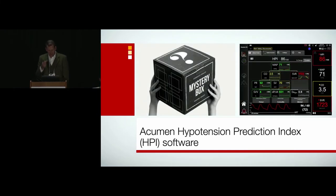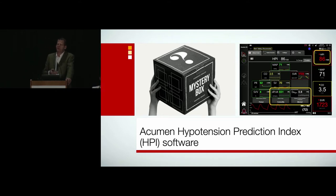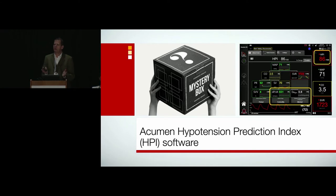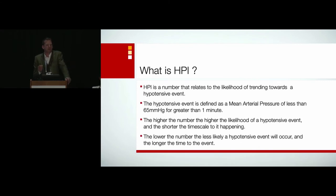What you get is an algorithm in the box — a number: the Hypotension Prediction Index. We also get parameters such as dP/dT, a measure of contractility, and EA-dyne, a rather complex parameter that gives us rich information about how to treat patients. This is not a mystery number — it's the output of a very complex algorithm looking at trillions of data points and thousands of features from an arterial waveform. HPI is a number that relates to the likelihood of trending towards a hypotensive event.